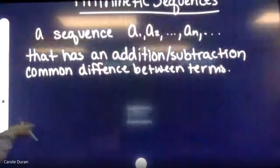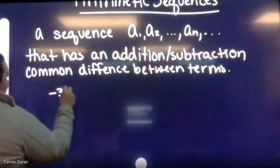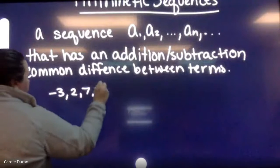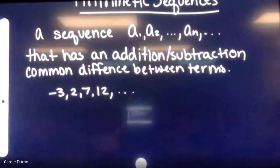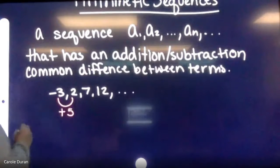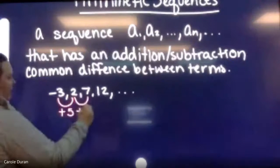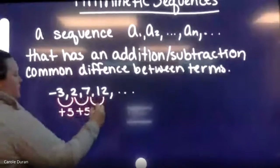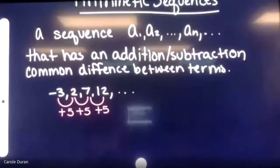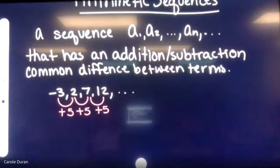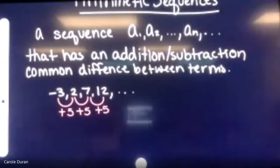For example, the sequence negative three, two, seven, twelve and so on is an arithmetic sequence because from term one to term two I added five, from term two to term three I added five, from term three to term four I added five. A constant positive five difference between each term is what makes this arithmetic — a constant addition or subtraction of the same number each time.